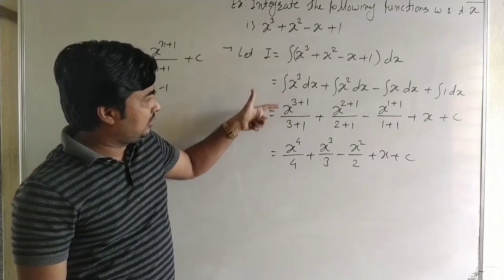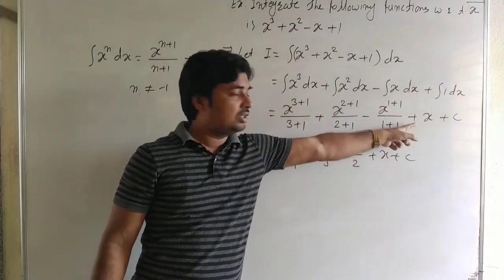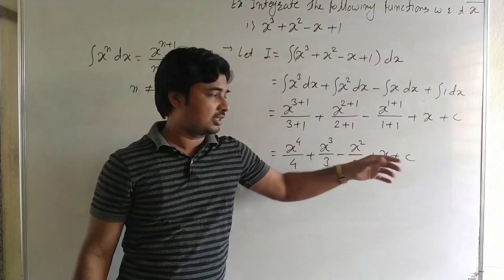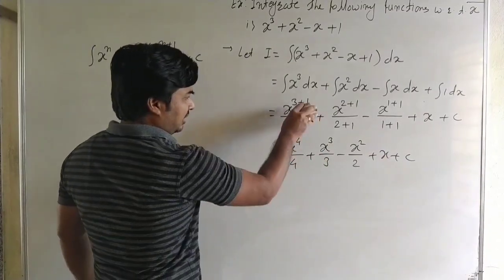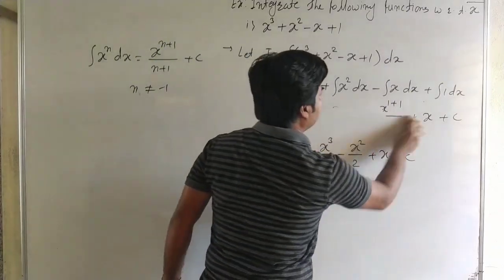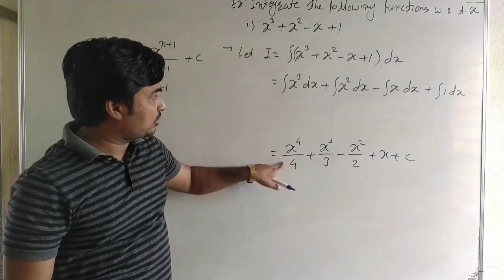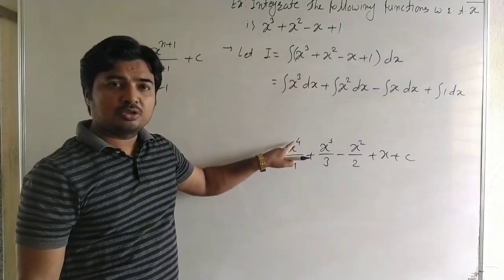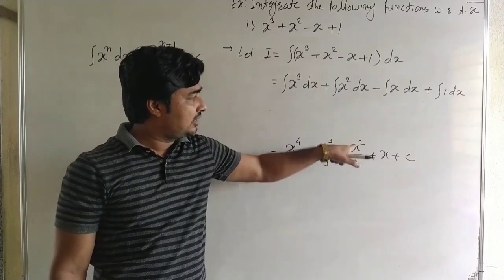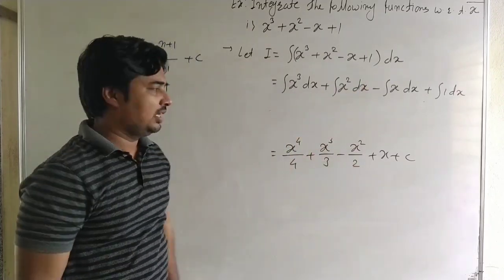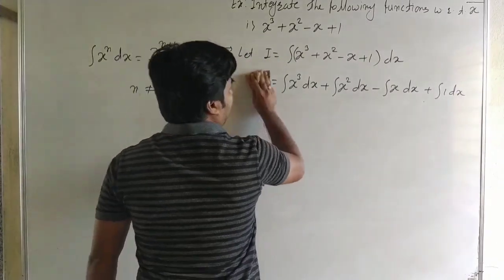All terms are in the form of xⁿ. The last term is a constant; integration of 1 is x. It is not necessary to write every intermediate step — we can directly write: integration of x³ gives x⁴/4, x² gives x³/3, −x gives −x²/2, and 1 gives x. Now we see the next example.